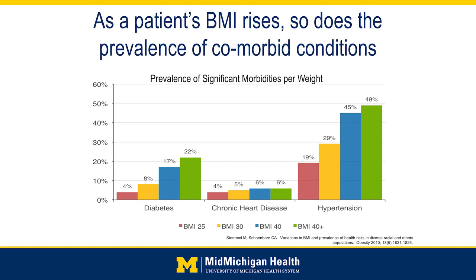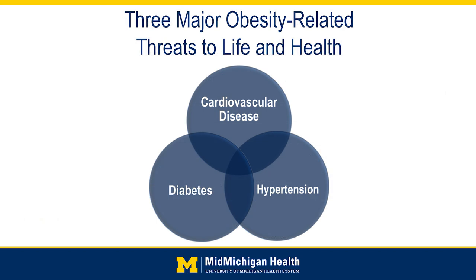There are health conditions closely linked to obesity — diabetes, heart disease, and hypertension all increase as BMI rises. There is a syndrome called metabolic syndrome or syndrome X where patients with obesity can also suffer from cardiovascular disease, diabetes, or high blood pressure simultaneously. Patients where all three of those conditions intersect have a very high rate of mortality.